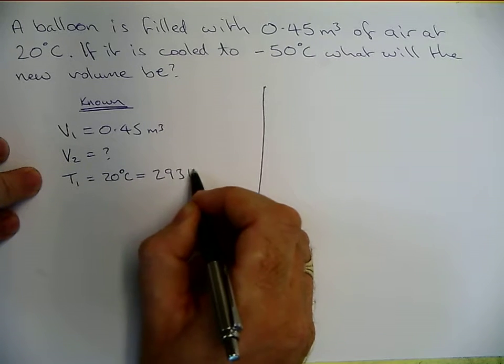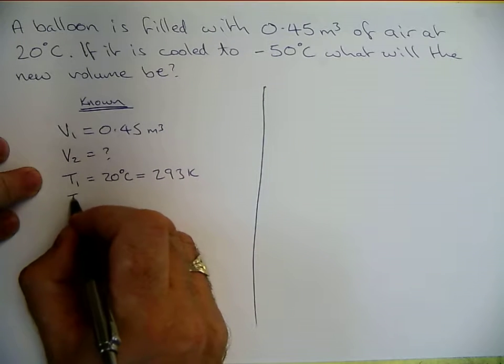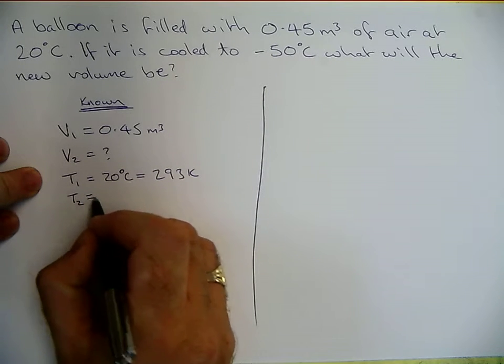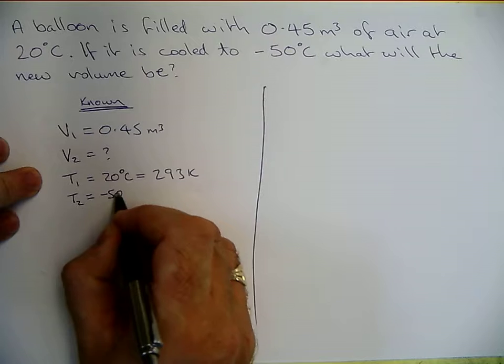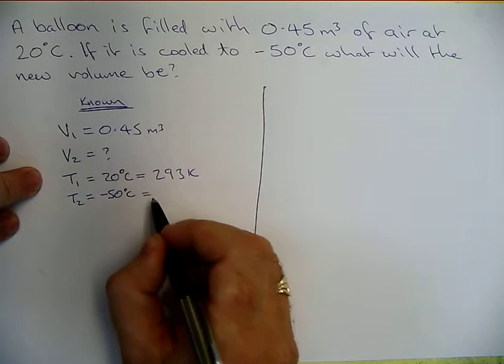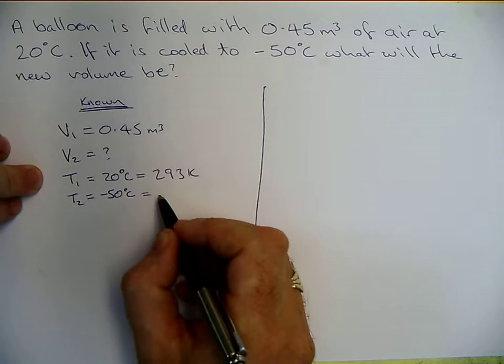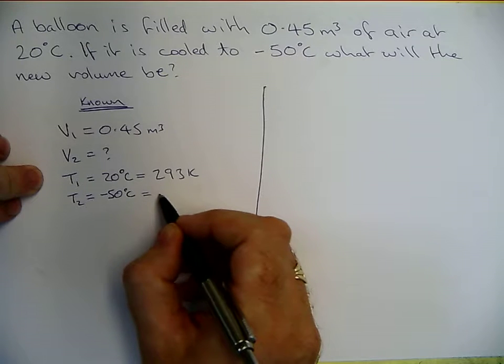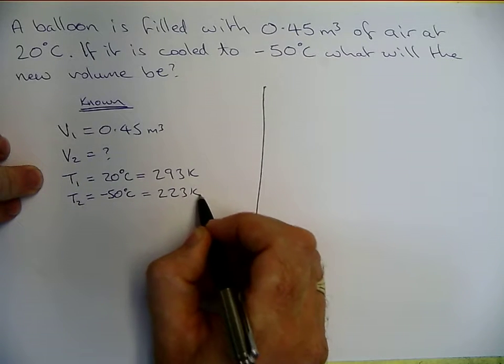so that's going to 293 Kelvin. T2 is negative 50 degrees Celsius. Plus 273, so 273 take away 50, 223 Kelvin.